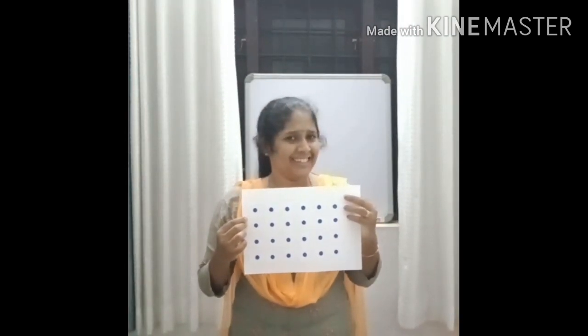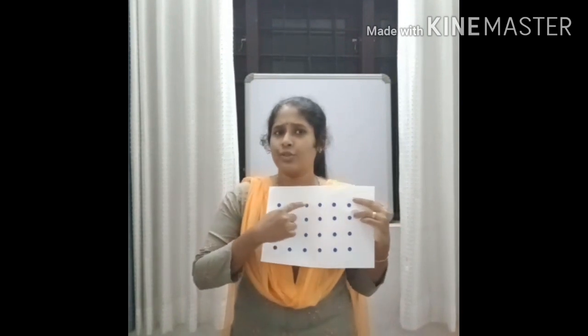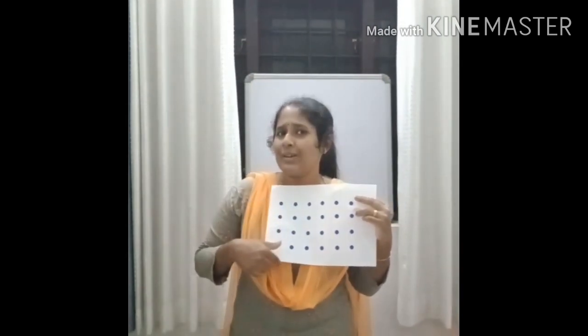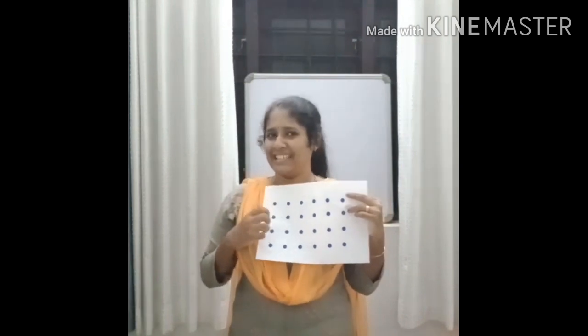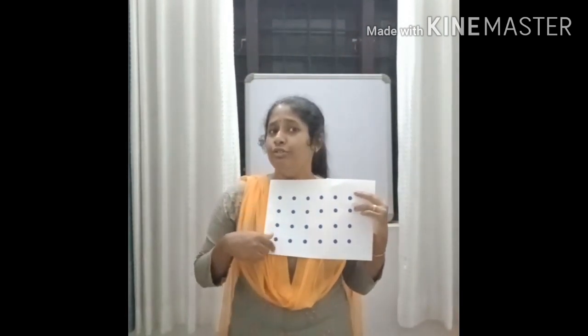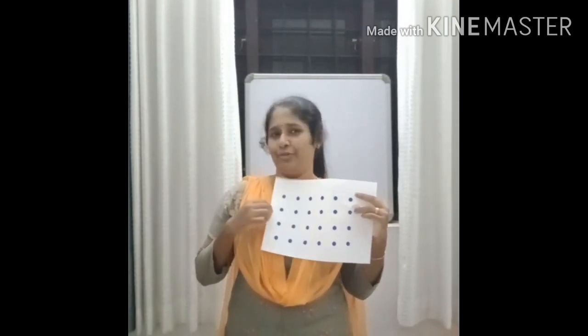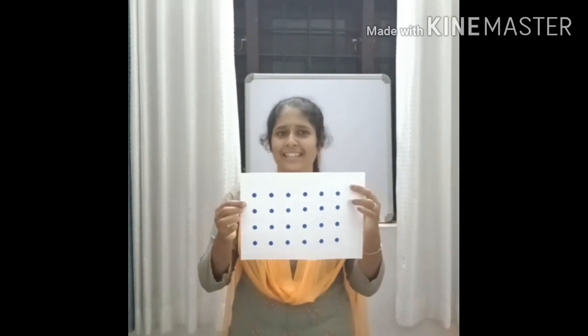Any other method? Yes, some of you count the first row and the first column and multiply them, right? That is six into four — twenty-four. In which shape are these dots arranged? Yes, it is in a rectangular shape.